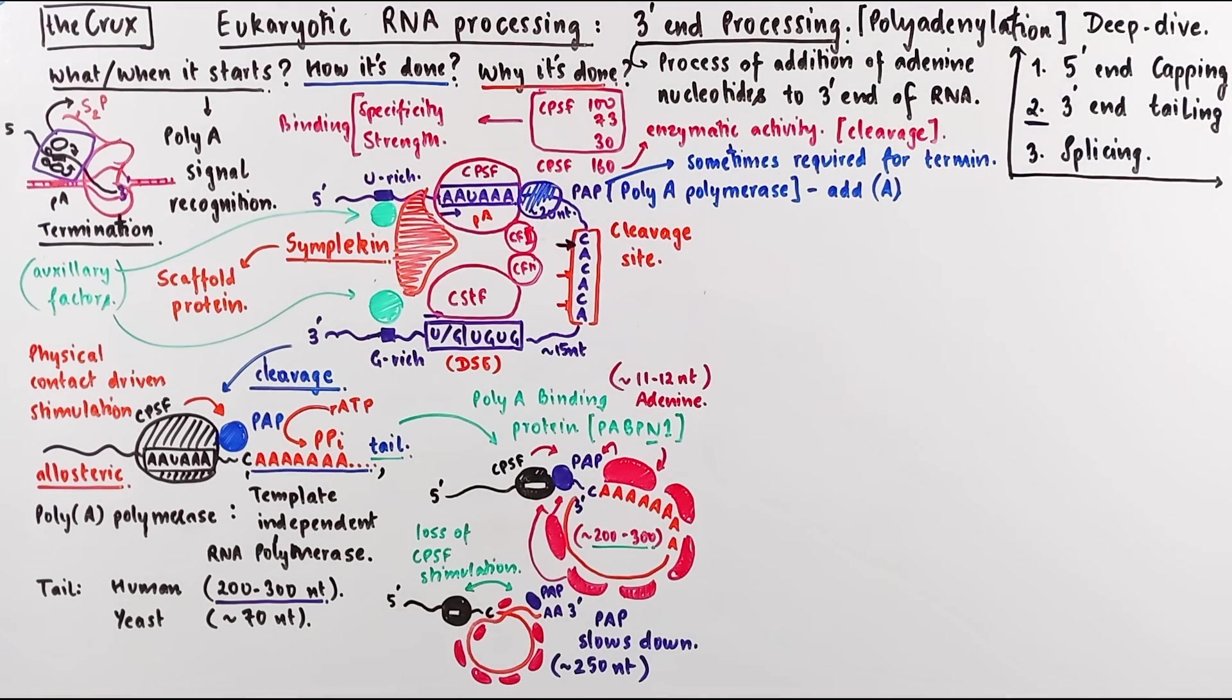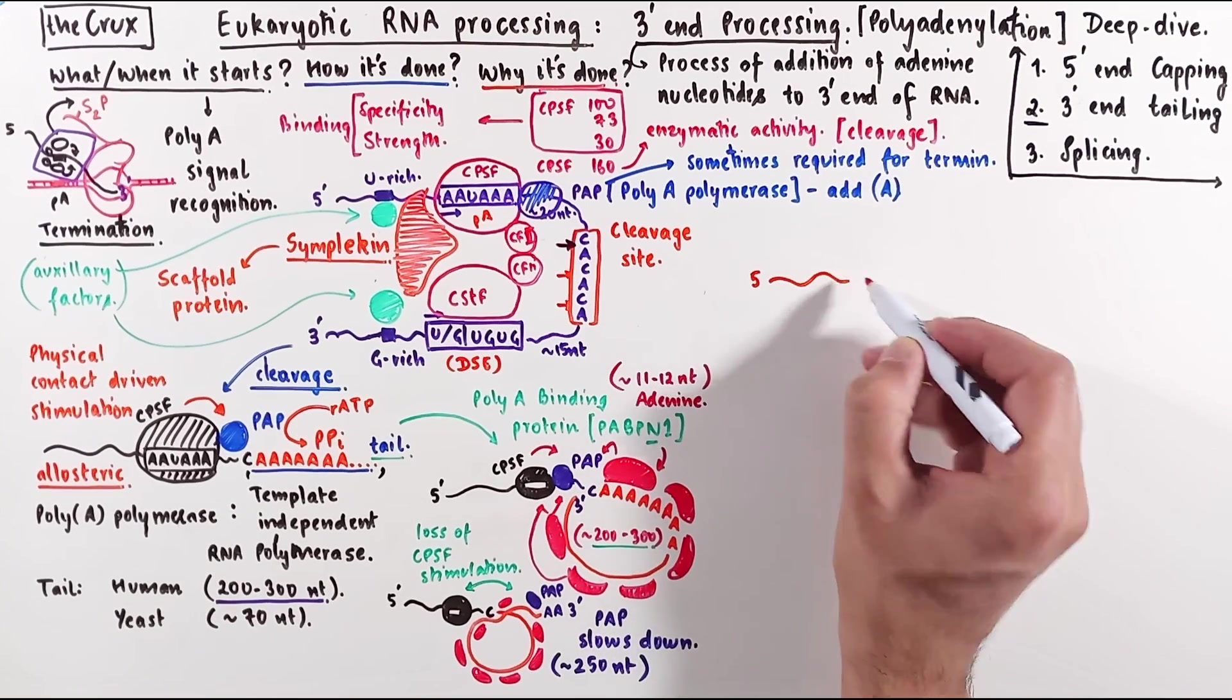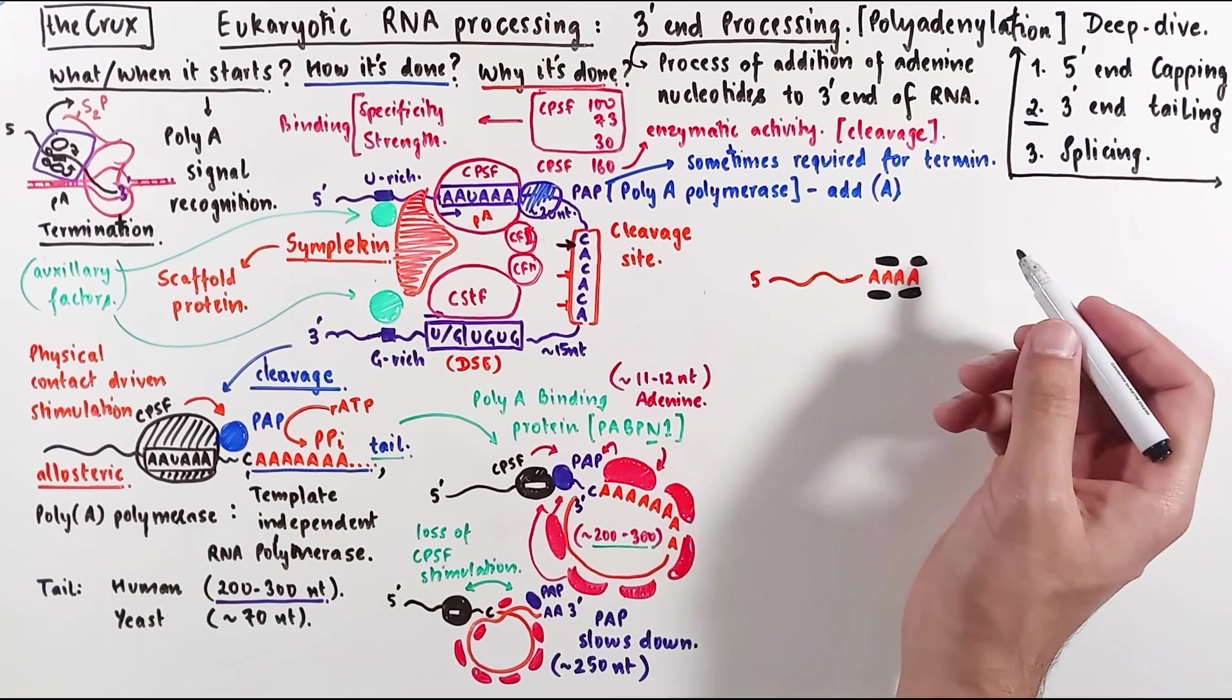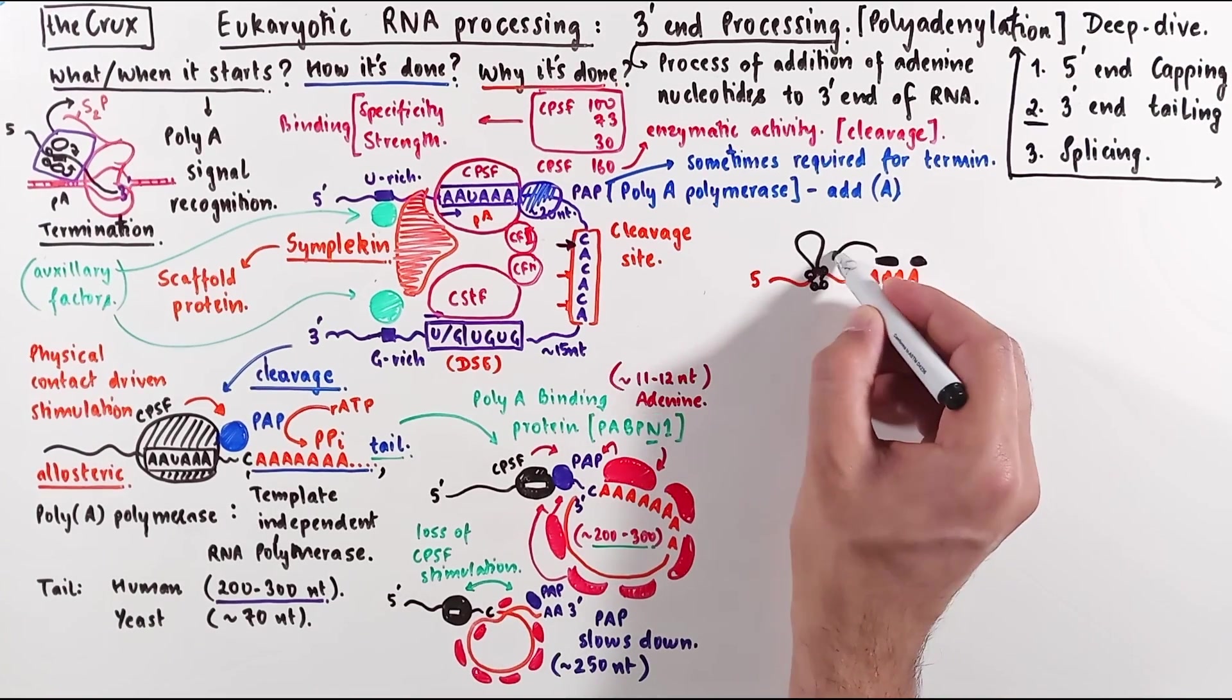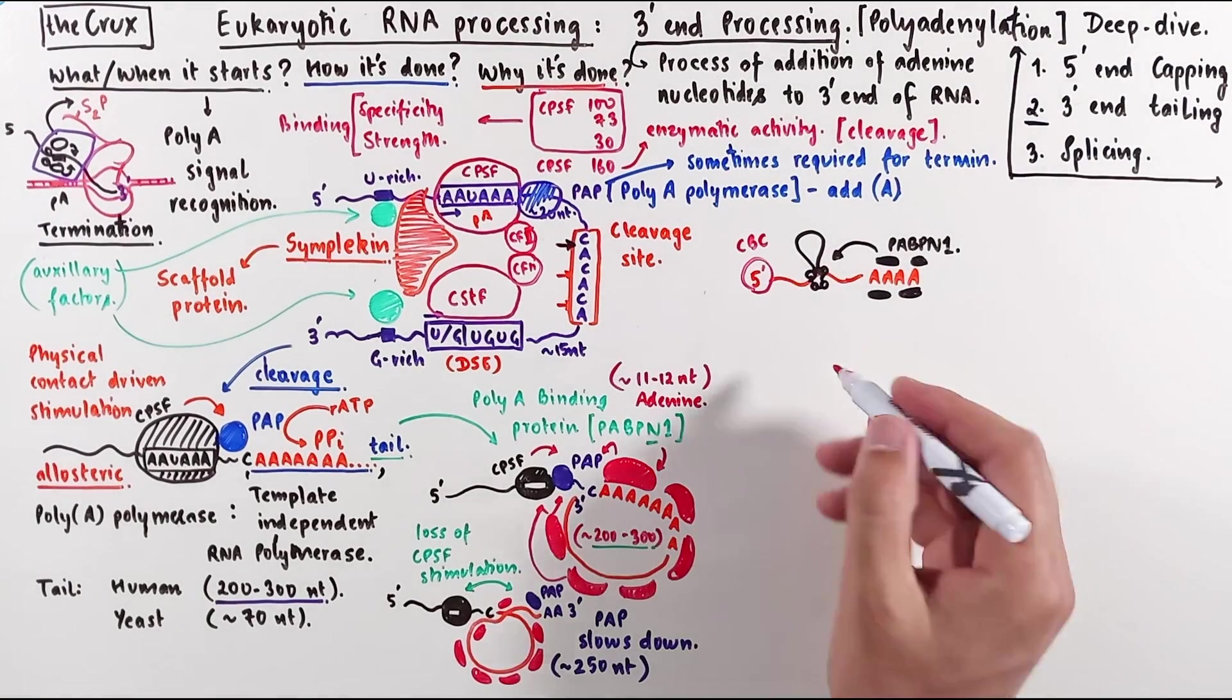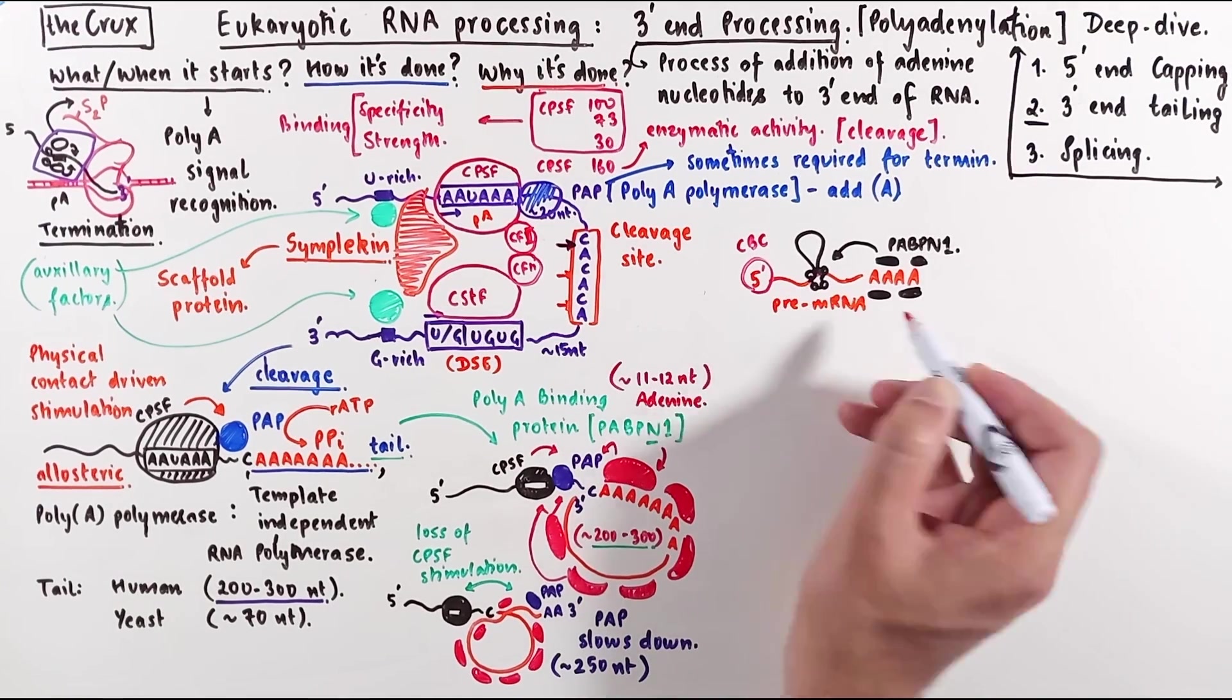Alright, so now let's see why this type of 3' end tailing is performed. After the polyadenylation is done, the polyA binding protein remains bound to the polyA tail, and it can actually interact with the splicing proteins and help in the process of splicing. We already know that the 5' cap is bound by the cap binding complexes. And after splicing and tailing, this pre-mRNA matures into an mRNA.